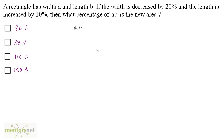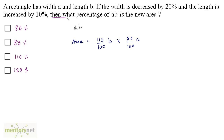Let us calculate the new area. The length is increased by 10 percent, so B becomes 110 percent of B, which is 110 upon 100 times B. The width is decreased by 20 percent, so A becomes 80 percent of A, which is 80 upon 100 times A. Cancelling zeros, we get 88 upon 100 times AB.